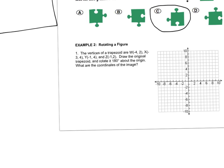This one's a little trickier because we're rotating on the coordinate grid. Follow along with me — make sure you're actually doing the scrap paper and not just watching. I've got a trapezoid. I'll plot the points: W is at negative 4, 2; X is at negative 3, 4; Y is at negative 1, 4; and Z is at negative 1, 2.